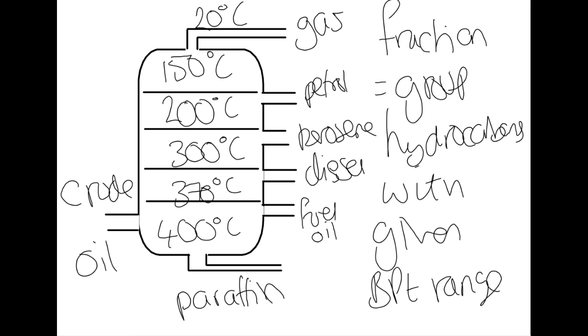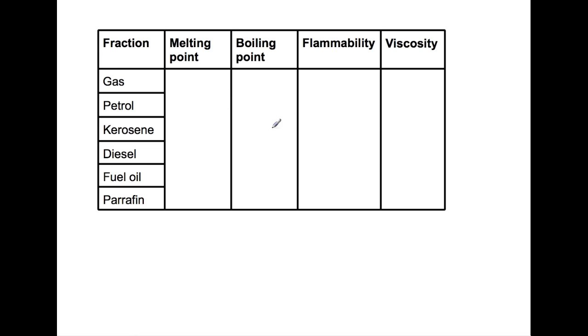Let's have a look at the properties of the different fractions. The melting point going from gas to paraffin increases. So we start with a low melting point up to a high melting point, and we have the same trend for the boiling point.